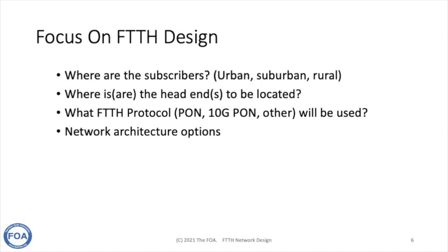There are some unique aspects of designing fiber-optic networks. For example, where are the subscribers? Are they urban with a very high density, rural with a very low density, or suburban with something in between? Are they in multi-dwelling units, which is common for urban, or in single-family homes, which is common for suburban and rural? You also have to decide what kind of fiber-to-the-home protocol you're going to use — regular PON like GPON, or a 10-gig version which might be only available for businesses. Remember, both GPON and 10G-PON can occupy the same exact network at exactly the same time, which is really convenient.